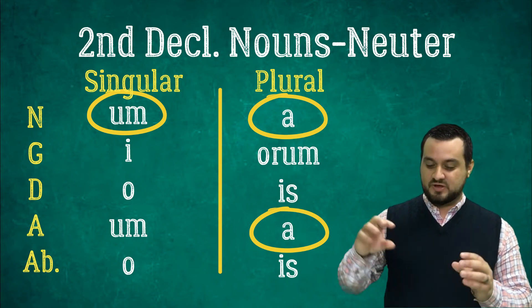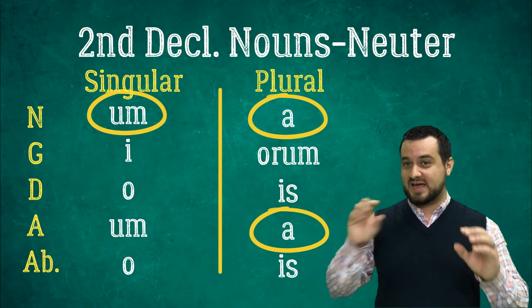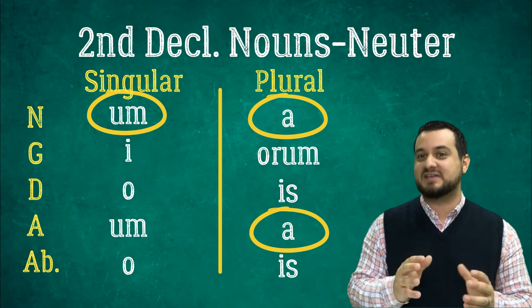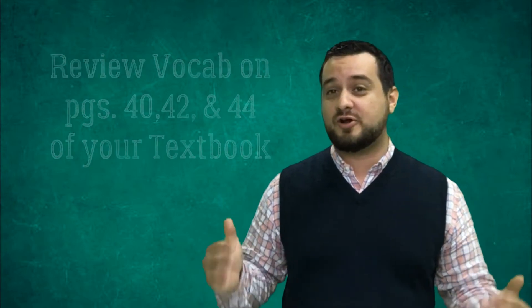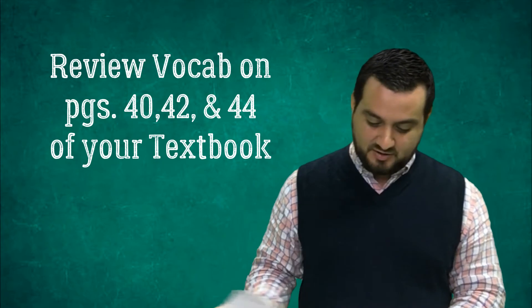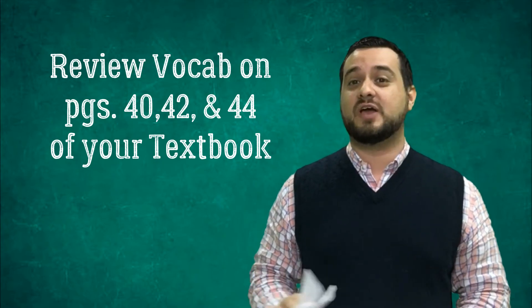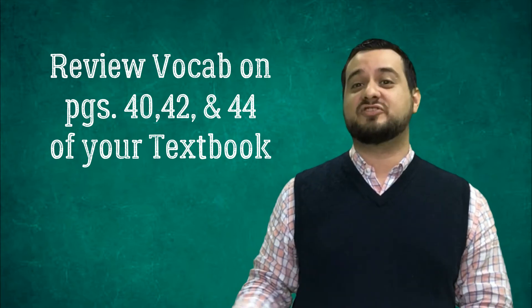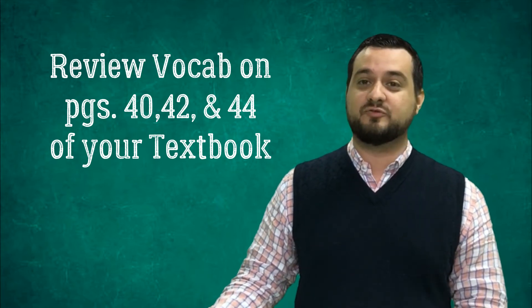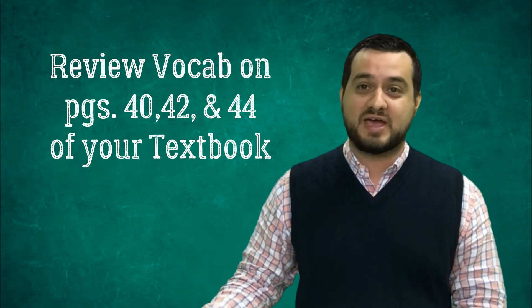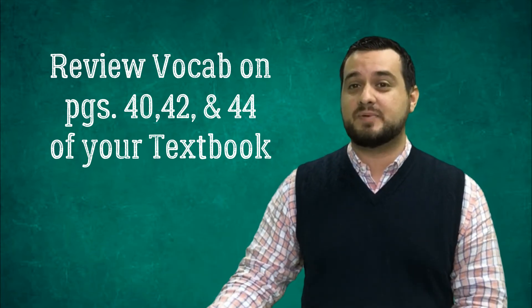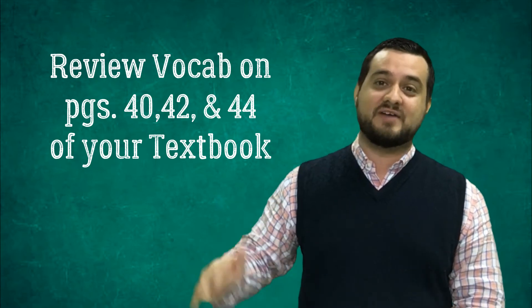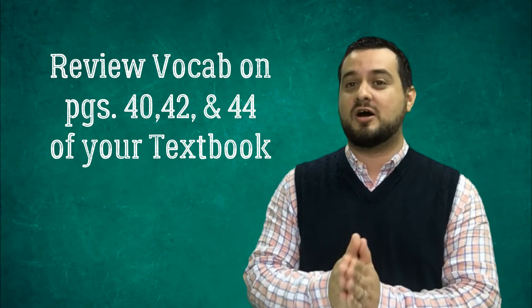So the neuter chart for second declension only has those three differences from the masculine second declension chart. Make sure to look over that and to look over your vocab as well. Since we've been in class, we have over 30 new vocab words, which are found on pages 40, 42, and 44. Make sure you're studying all of the vocab for pages 40, 42, and 44, and any additional vocab we receive in the coming weeks. We have a test coming up in just a month and all of that vocab will be on that test.